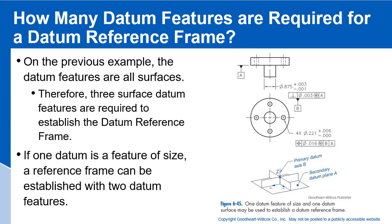How many datum features are required for a datum reference frame? When we talked about planes, we need three mutually perpendicular planes to establish a datum reference frame. But if one of our datum features is a feature of size — on previous examples the datum features were all surfaces, so three surface datum features were required — if one of those datums is a feature of size, the reference frame can be established with only two datum features.